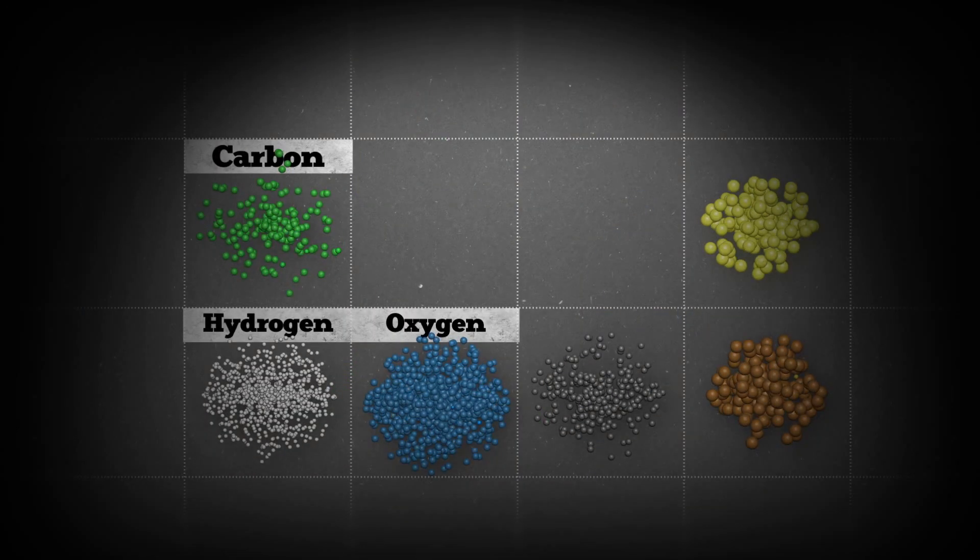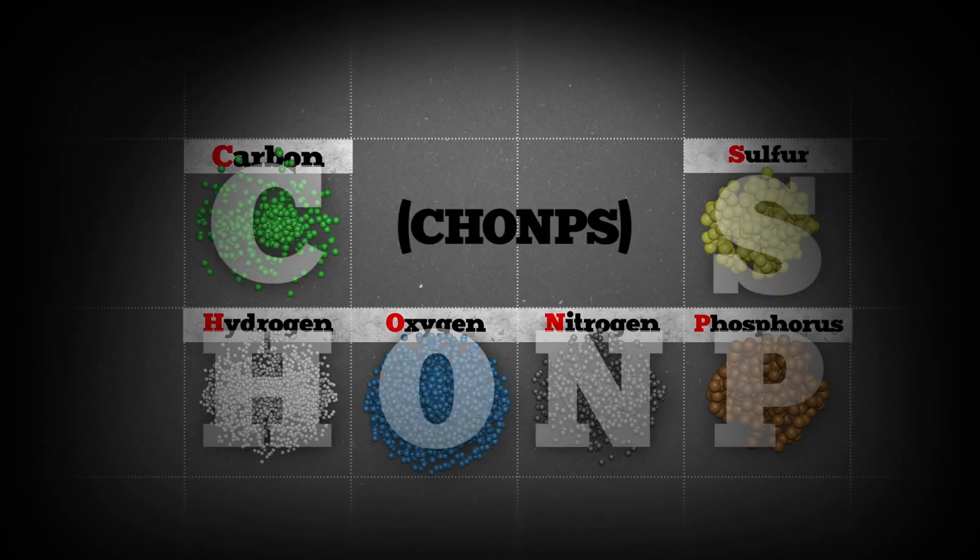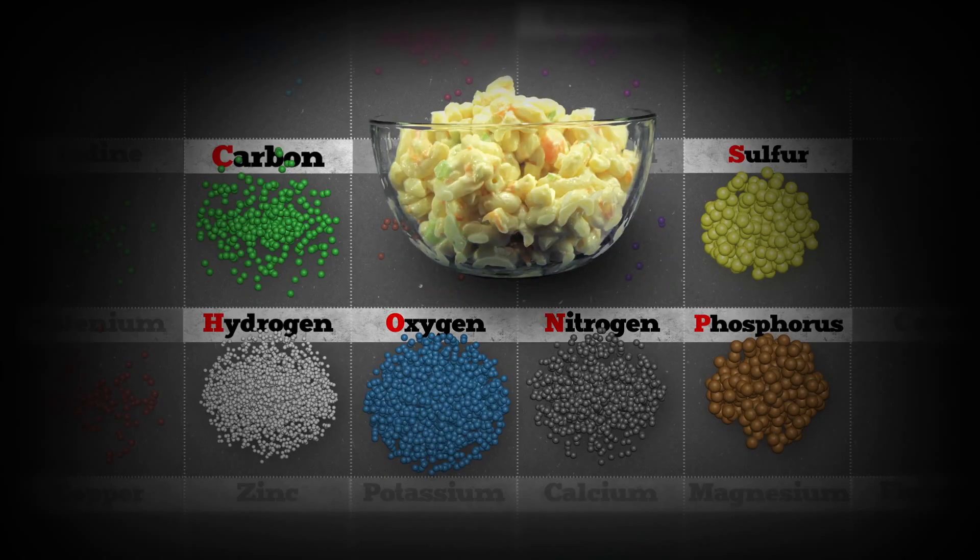Carbon, hydrogen, oxygen, nitrogen, phosphorus, and sulfur. Or CHONPS. There's a few others, but the big six is what macaroni salad is made of.